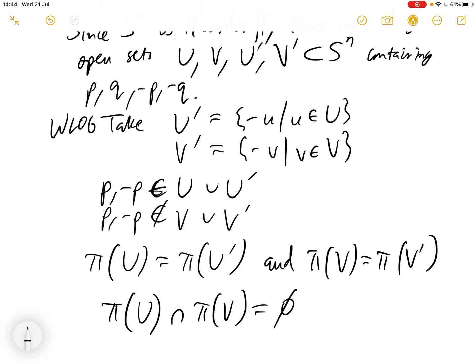So we found our disjoint open sets around X and Y in RPn. We can just take pi of U and pi of V, and obviously there's a bit to check that these are both open, but that follows from the fact that pi is a quotient map and U and V are open.